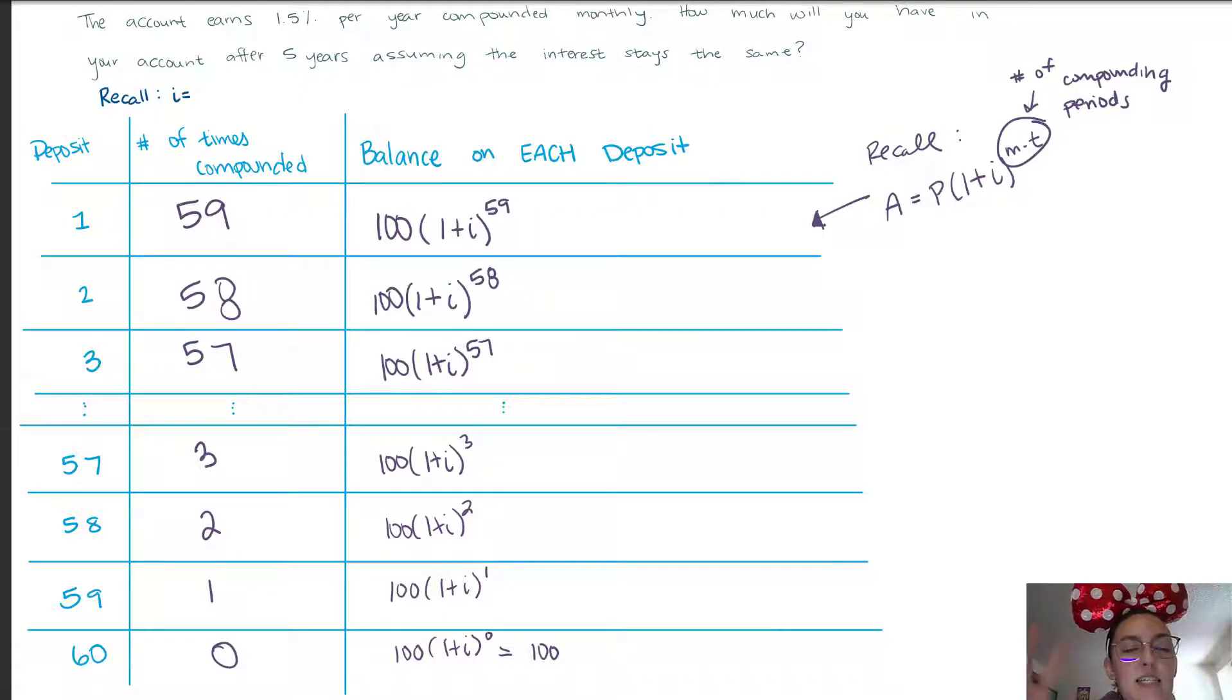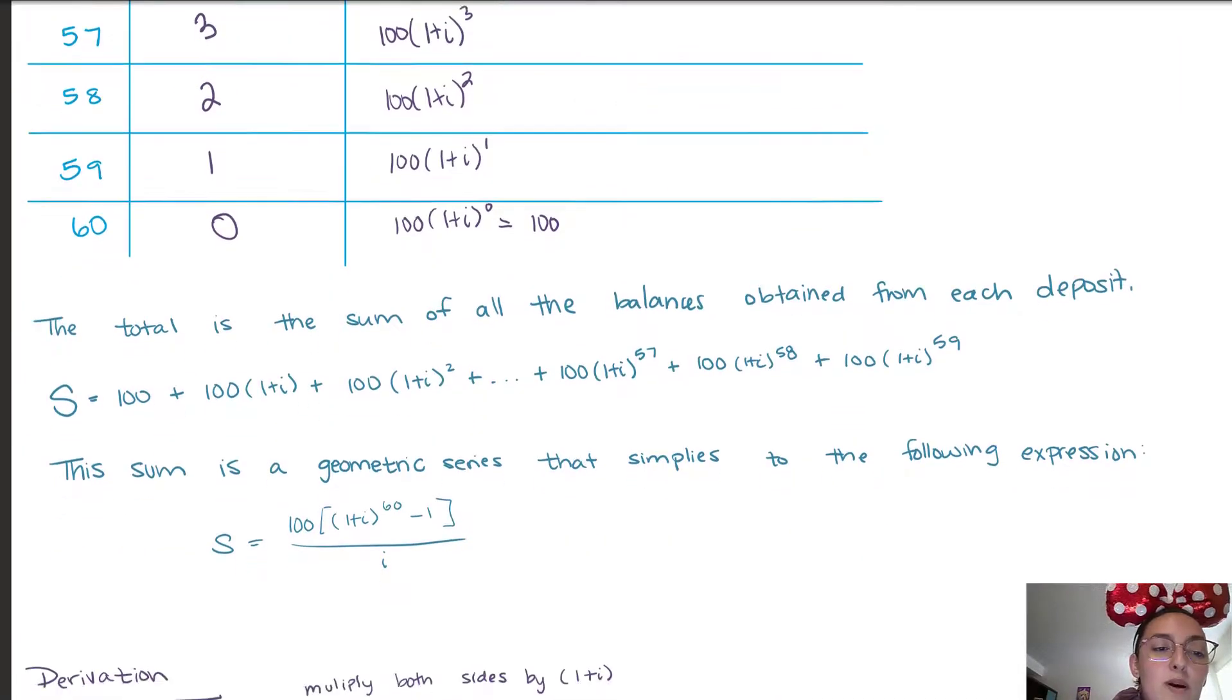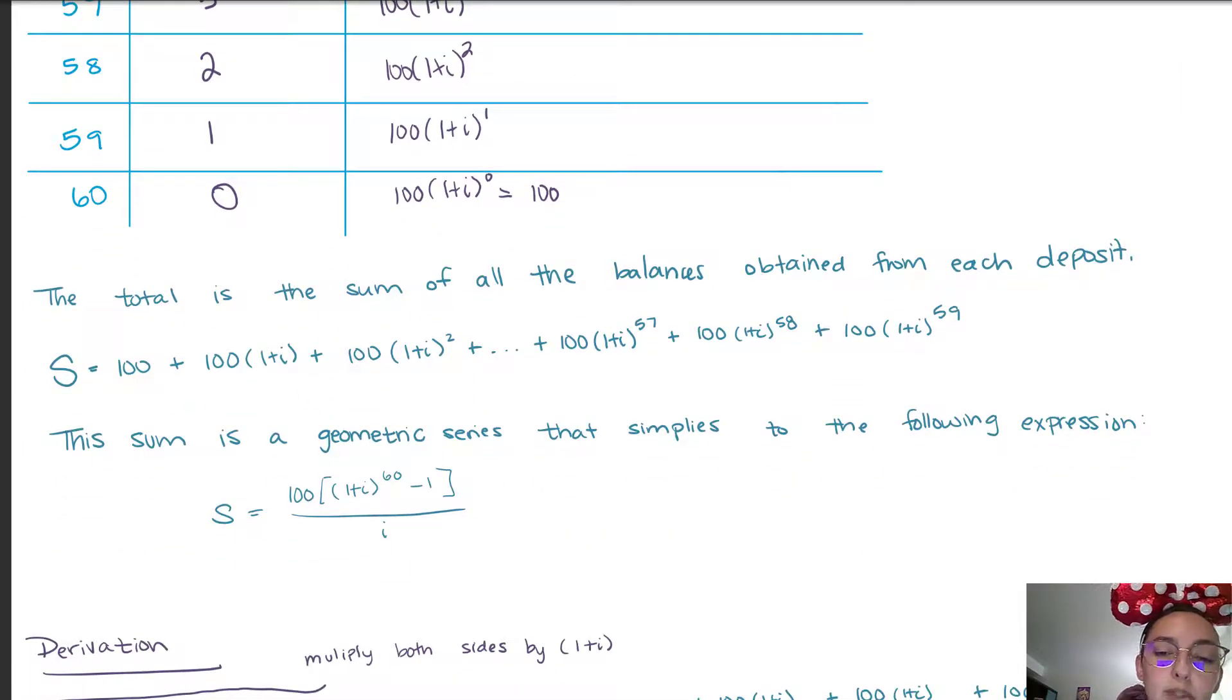Now notice I kind of separated each of the deposits into its own thing, so we got the balance for each deposit. The cool thing about all of this is this is our savings, so our total balance for savings is going to be the sum of each of the balances of these deposits. So if we write out the sum, and I wrote it in backwards order because I think it's nicer in math to write our terms in ascending powers, our total savings is the sum of each of the deposits that we derived in our table.